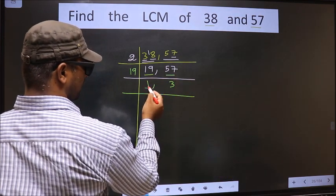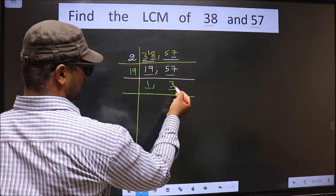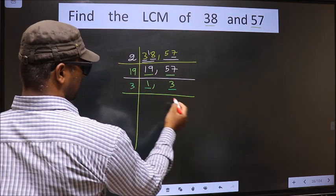We got 1 here, so focus on the other number, that is 3. 3 is a prime number, so 3 once is 3.